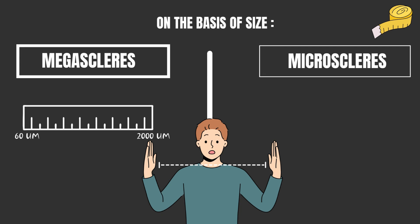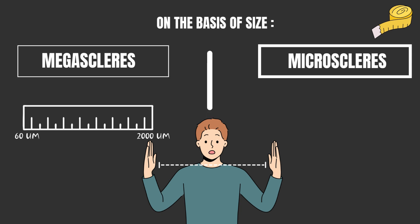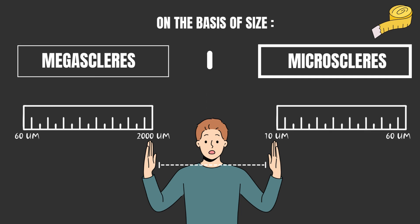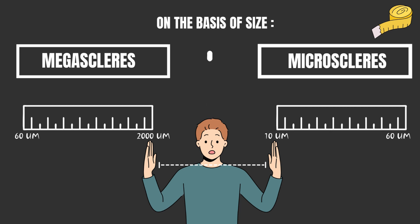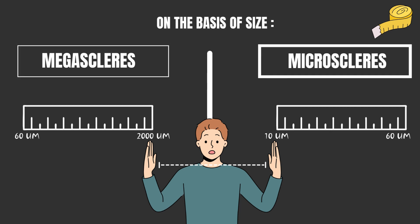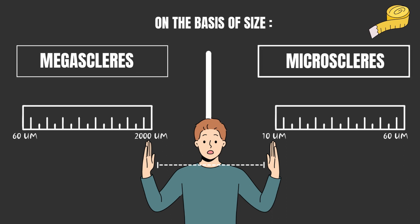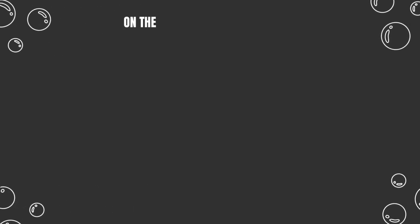The second size category is microscleres. These are small-sized spicules measuring from 10 to 60 micrometers and are distributed throughout the mesoglia and cortical region. They are not part of the main supportive framework.